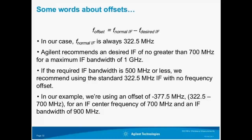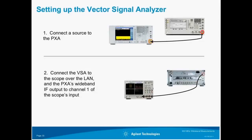Let's briefly discuss offsets. In our case, the normal IF is always 322.5 MHz. Agilent recommends a desired IF of no greater than 700 MHz for a maximum IF bandwidth of 1 GHz. If the required IF bandwidth is 500 MHz or less, we recommend using the standard 322.5 MHz IF with no frequency offset. In our example, we are using an offset of minus 377.5 MHz for an IF center frequency of 700 MHz and an IF bandwidth of 900 MHz. Once you've connected your source to the RF input of the PXA and the IF output to the scope, connect your vector signal analyzer to the scope if it's running on a separate computer, or simply use it on the scope directly.